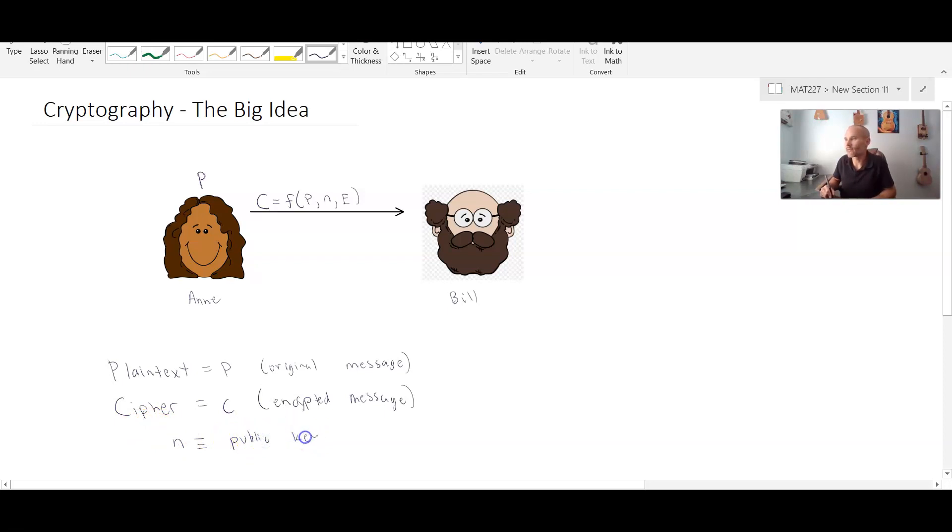And just like the phrase emphasizes, it's a key that sort of locks the message. But it's public. Anybody can lock the message. Anybody can lock the box. And this value of e, as we'll soon learn, e is what is called an encryption exponent. So that's defined to be an encryption exponent.